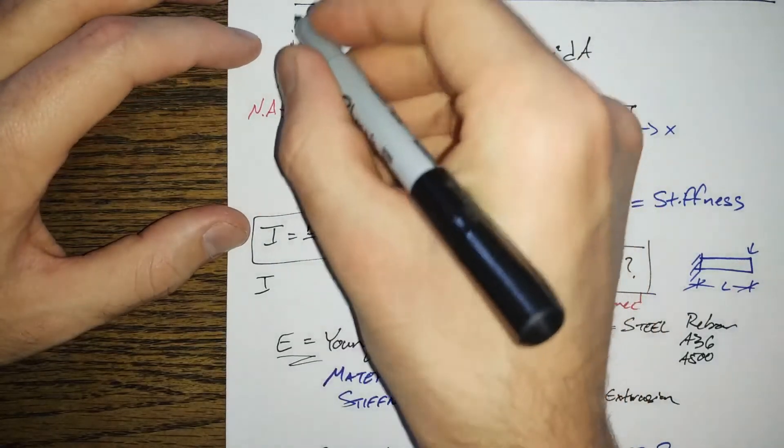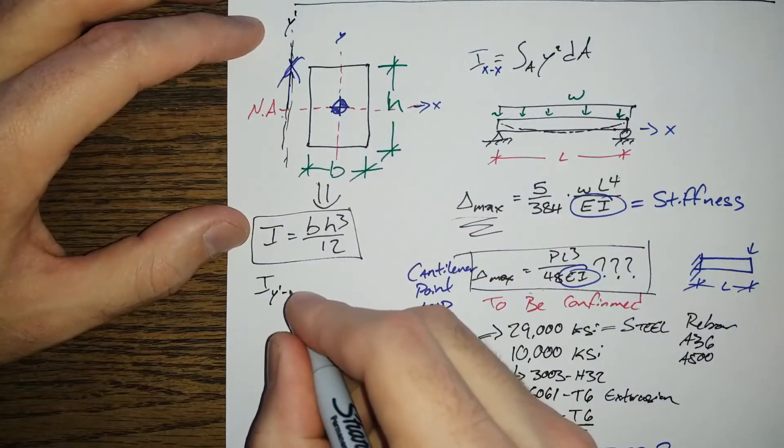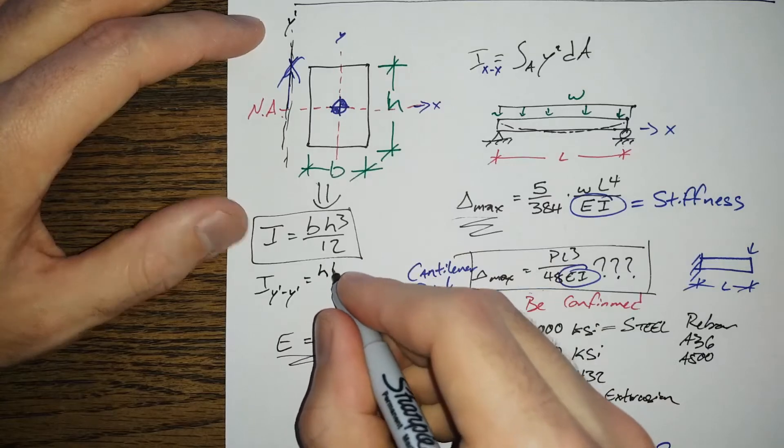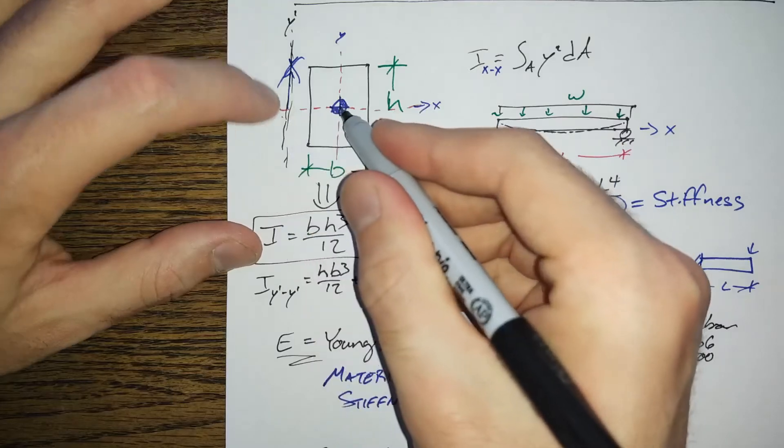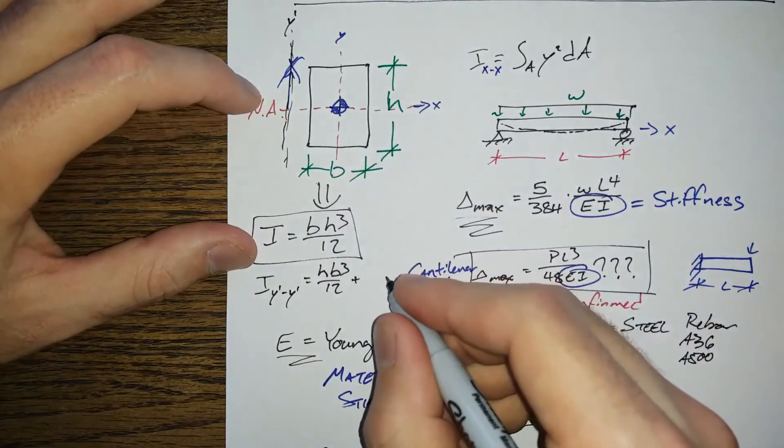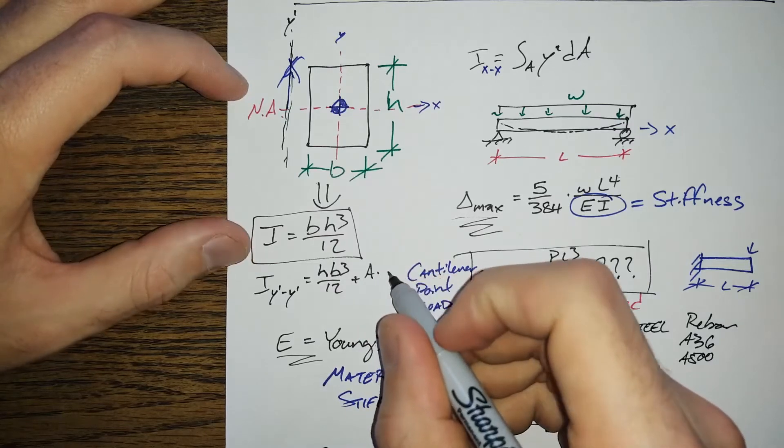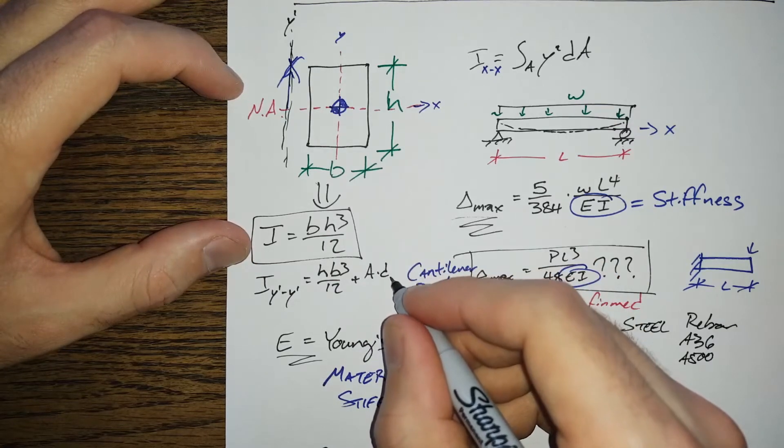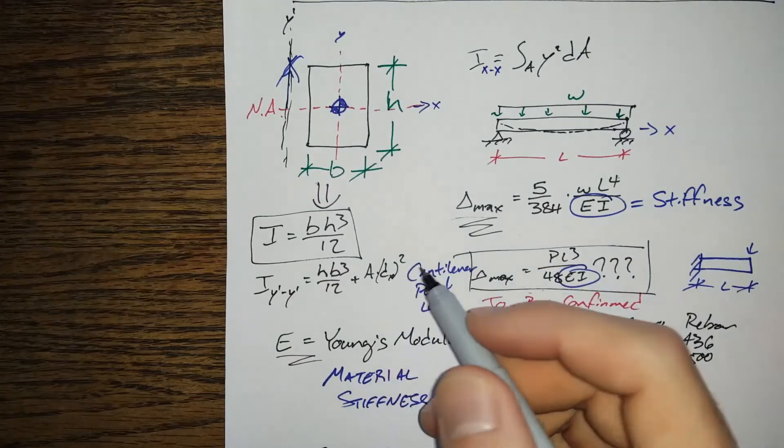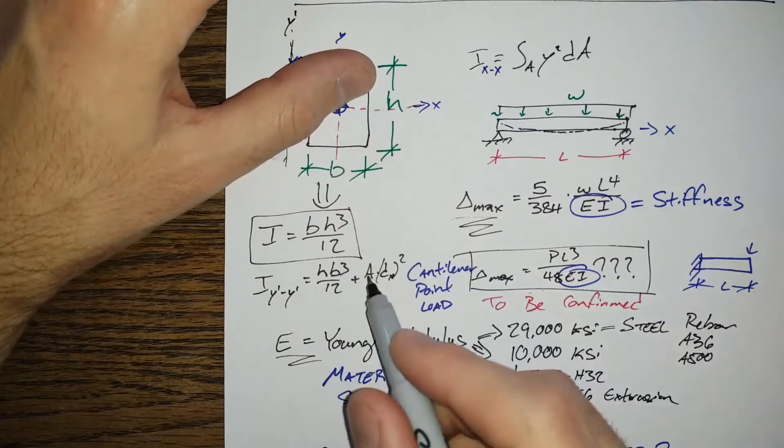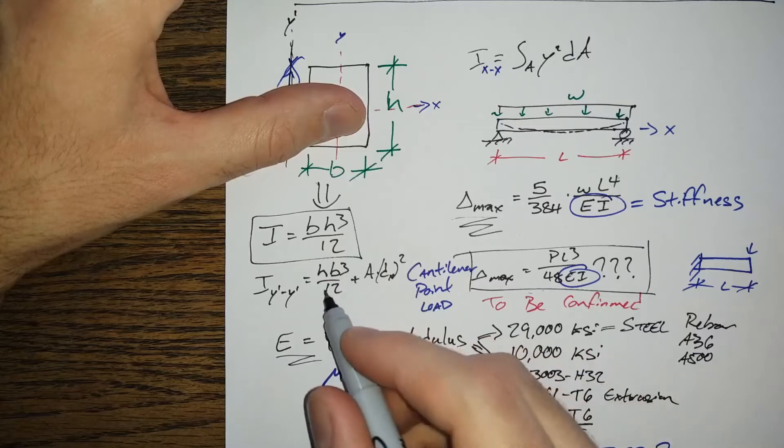So I call this y prime over here. Iy prime is going to equal h b cubed over 12 plus there's an area and then a distance to the centroid, so we'll do A times distance x squared. So depending on the shape that you've got, this distance portion can come in and be much stronger and kind of bury this little portion here.